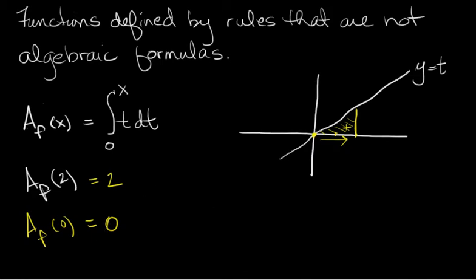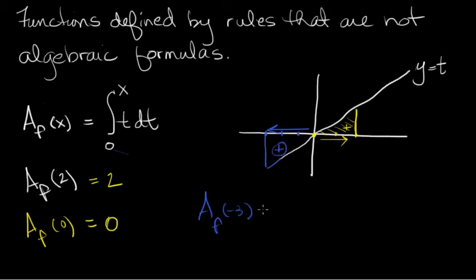Let's do one more. How about A sub f of negative 3? I go up here and I look at this graph. This graph doesn't change — I'm using that graph every time. I go out to negative 3, and I get another triangle. This time I'm going right to left, so this will give me a positive contribution. Its area is 3 times 3, 9 divided by 2, which is 9 halves. So we're using that graph y equals t, getting signed area, to determine the value of this other function A sub f of x.